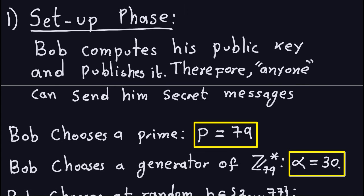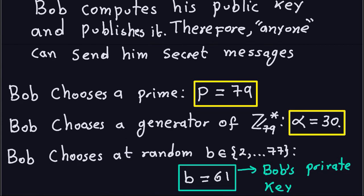The way Bob computes his public key: the first thing he has to do is choose a prime number, which in practical cases will be a large number. For this example, we're going to choose 79, which is a small prime number. Bob also has to choose a generator of Z_p*, which in this case we're going to choose alpha to be 30. It's a generator for Z79*.